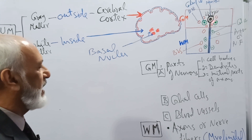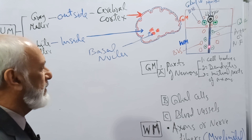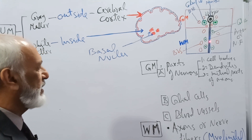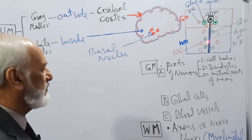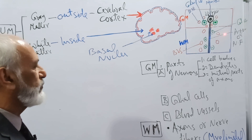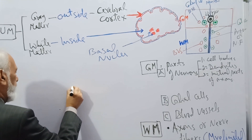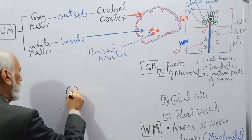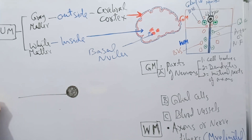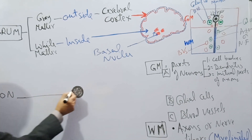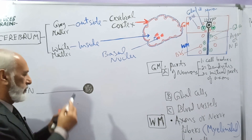Cell bodies and dendrites are non-myelinated. But as the axons enter the white matter, they are immediately covered by a myelin sheath. The axons, or nerve fibers, in the white matter are myelinated. Now, what is the myelin sheath, and why does the white matter appear white in color with the naked eye?